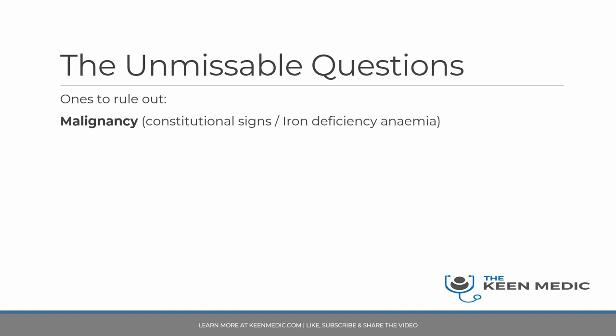You need to always be looking out for red flag signs like night sweats, weight loss, loss of appetite — these are the constitutional signs that you need to be asking patients if they've got anemia, especially if they are elderly. Or iron deficiency anemia — this is something that you will find on the blood test. Sometimes in Paces you will get blood tests and need to recognize iron deficiency anemia. If someone has a change in bowel habit and they have come in with iron deficiency anemia, you have to immediately think about malignancy and ruling that out — that should become your top priority.